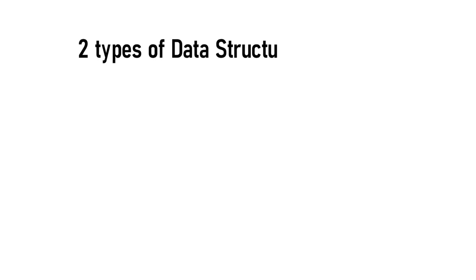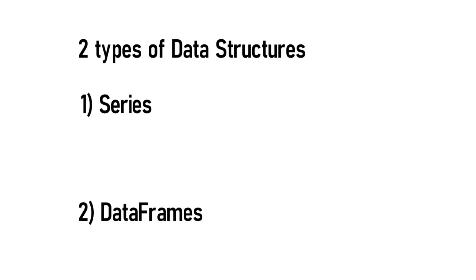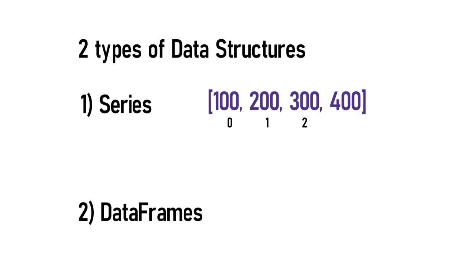Pandas has two types of data structures. One is the series and the other one is the data frames. Series are nothing but one-dimensional arrays with custom indexes. We will try to understand what custom indexes are in the upcoming videos. But for now, series are data structures which can accommodate single-dimensional homogeneous arrays. Homogeneous means all the data inside a series should be of the same type.